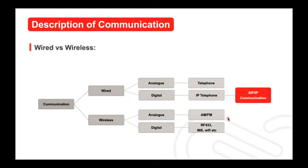RF868 supports bidirectional signal interface, used for lighting control where you press a button to turn on the light and want to know whether it actually turned on. Many home automation companies use RF868. In Asia, IoT — Internet of Things — uses Wi-Fi at 2.4 GHz, which supports many protocols such as Zigbee, Bluetooth, and Wi-Fi. This is a rough description of the wired and wireless, analog and digital landscape.